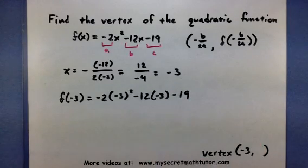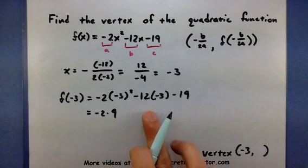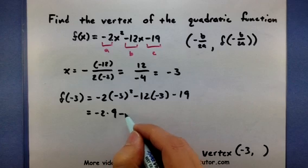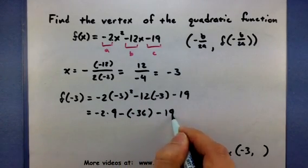There we are. Now let's evaluate this, being nice and careful. So negative 2 times 9, see 12 times negative 3, so there's a negative 36 minus 19.